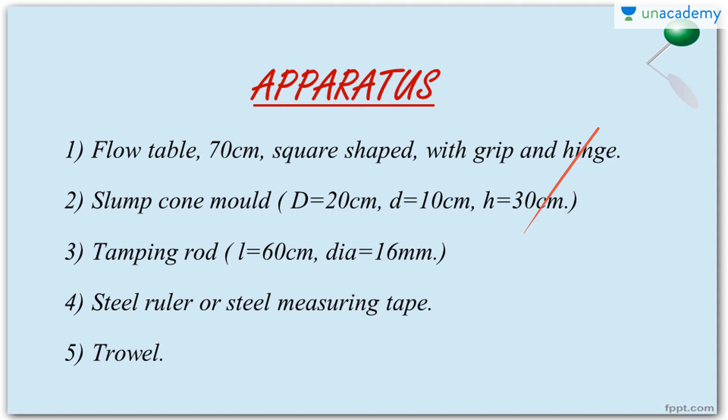Another apparatus is the tamping rod, which has a length of 60 cm and a diameter of 16 mm, with one end rounded — used for compaction as usual. We also need a steel ruler or steel measuring tape to measure the diameter of the concrete spread. Finally, a trowel is needed to level the top surface of the cone, so the frustum of the cone is properly leveled.